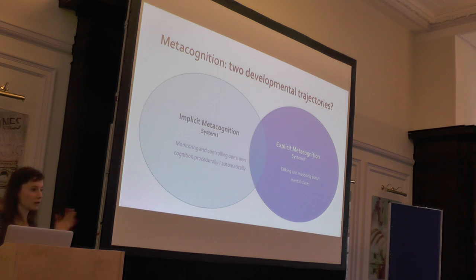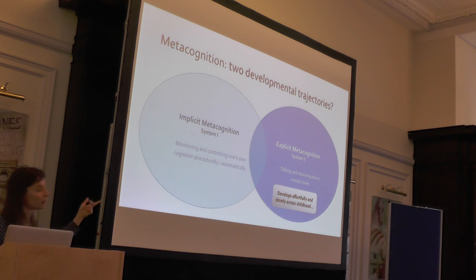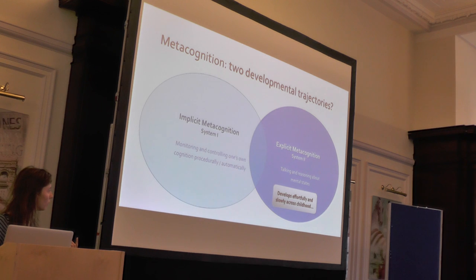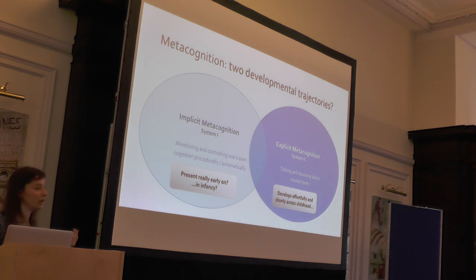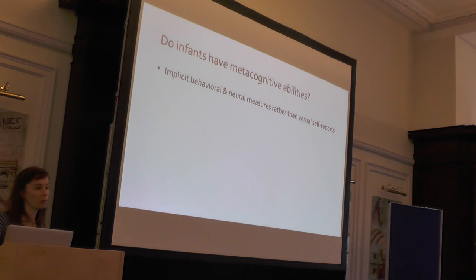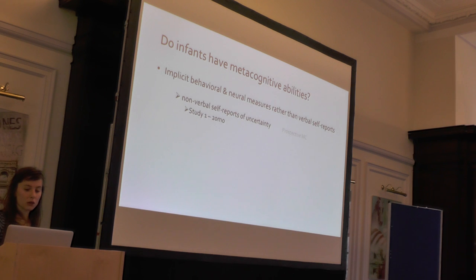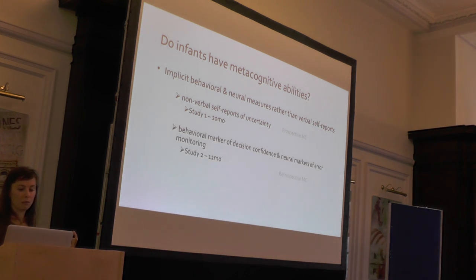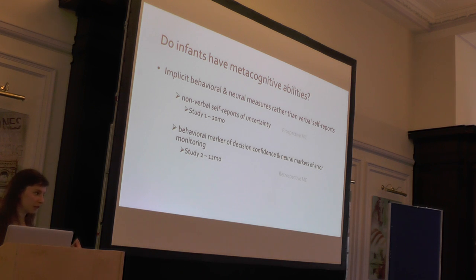The idea is that these two systems also follow two distinct developmental trajectories. The explicit system develops quite slowly and effortfully across childhood. But perhaps the implicit system is present really early on, perhaps already in infancy. That was the hypothesis we were trying to test. To do this, we relied on implicit behavioural measures and neural measures rather than verbal self-reports. I will present a first study still relying on non-verbal self-reports in 20-month-olds to test prospective metacognition, and then a second study with 12-month-old babies using behavioural markers of decision confidence and neural markers of error monitoring.